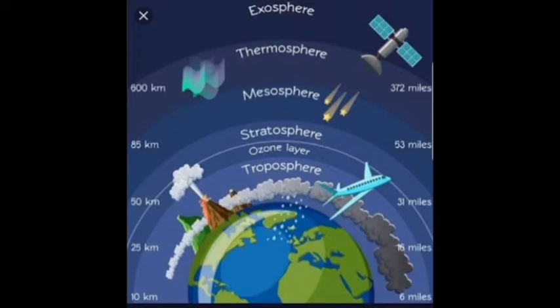There is another reason why the troposphere is thick near the equator. The Earth is not a complete sphere — it is elliptical in shape. So the radius from the center of the Earth to the poles is less compared to the radius toward the equator, meaning the gravitational pull of the Earth toward the equator is less than toward the poles.